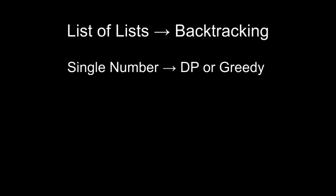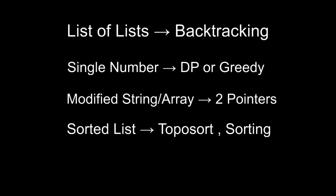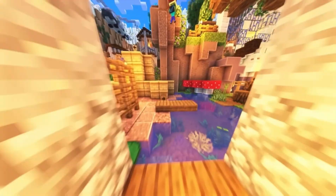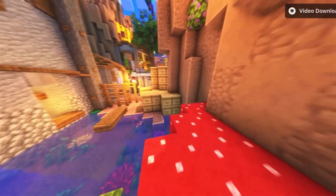If the output is a single number — like maximum profit, minimum cost, or number of ways to do something — it's often dynamic programming or greedy. If the output is a modified array or string — maybe removing duplicates in place, reversing a list, or rotating an array — that usually suggests a two-pointer approach. And if the output is a sorted list, you are probably dealing with some form of sorting or even a topological sort in graph problems.